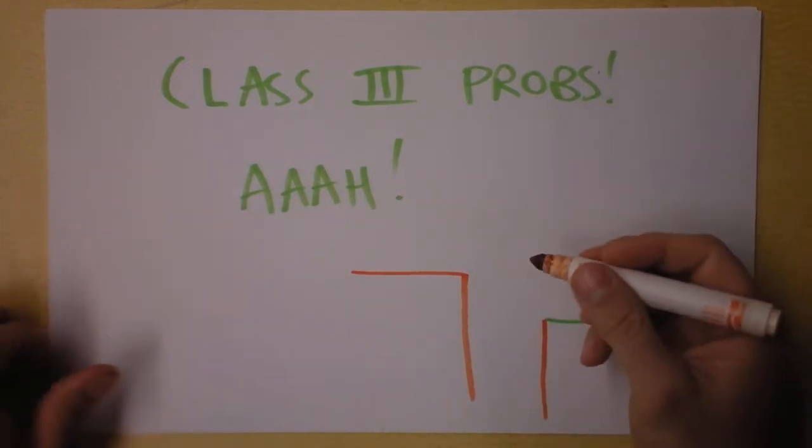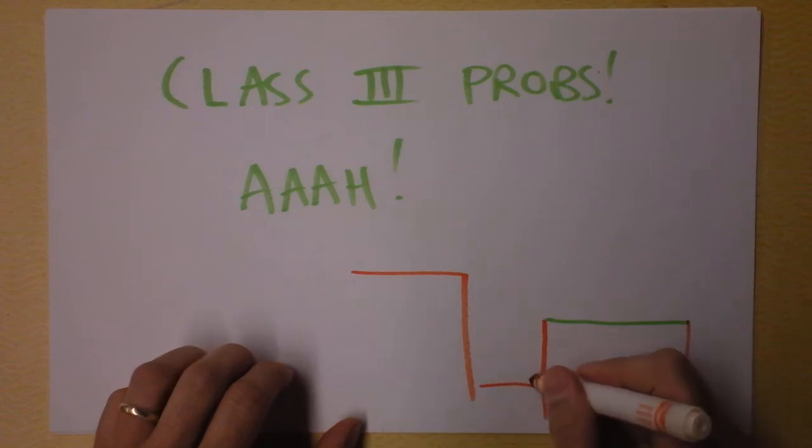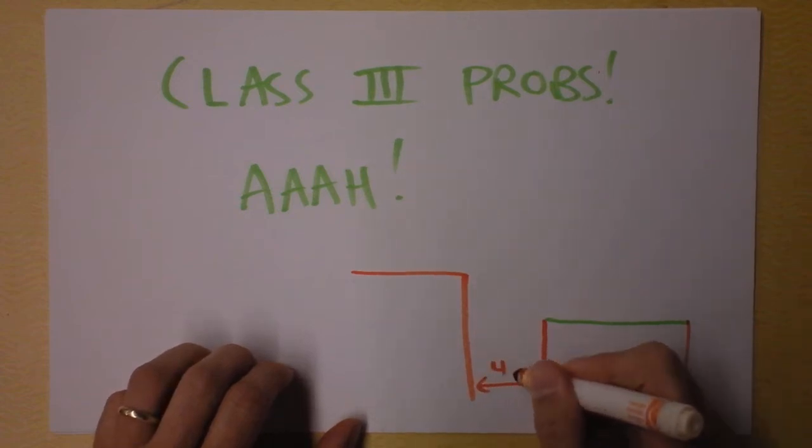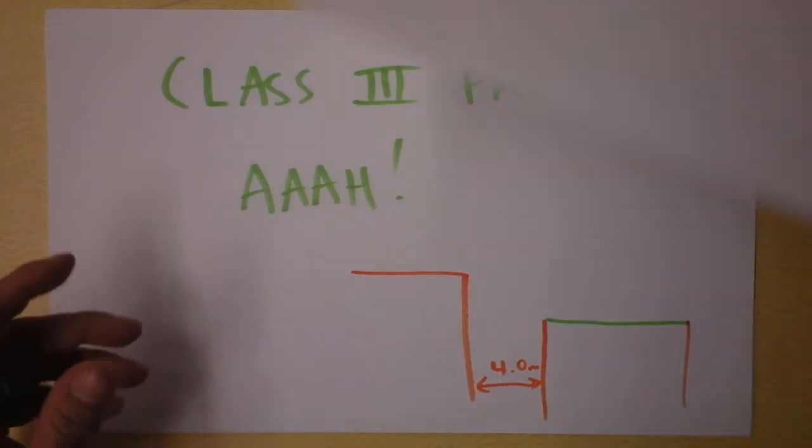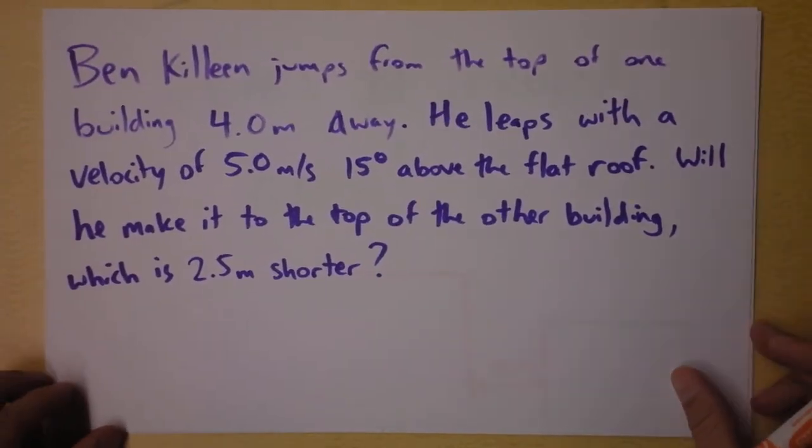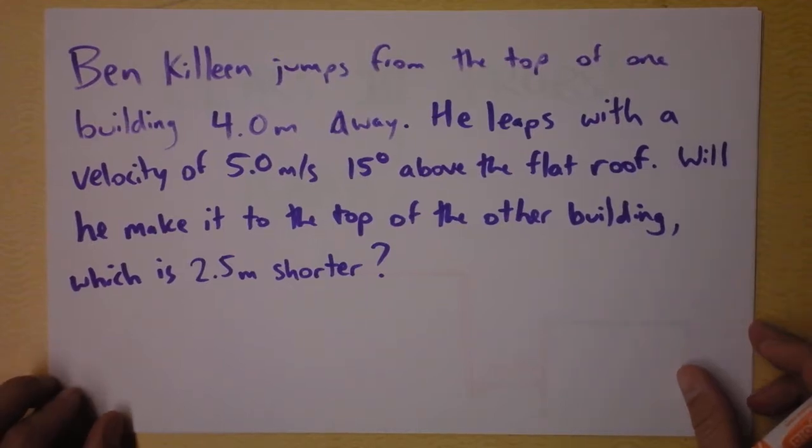And the building's over here, and Ben Killeen, having done something that he shouldn't have done, is going to jump to the other building. He says the separation of the two buildings is four meters. Wait, you haven't read the problem. Here's the problem. Ben Killeen jumps from the top of one building, four meters away, to another building.